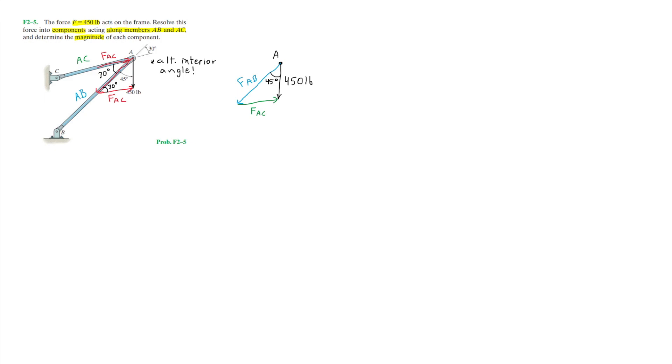So in our triangle, we have two known angles, 45 degrees and 30 degrees. Since we have two angles in our triangle, we can find the third angle, which I'll call alpha, by simply subtracting the sum of the two angles from 180 degrees. So alpha is equal to 180 degrees minus 30 plus 45 degrees.